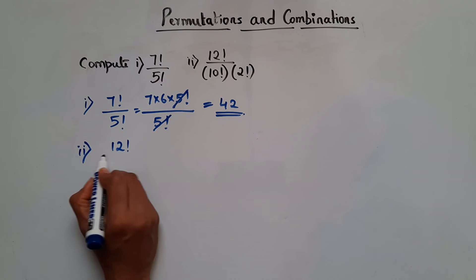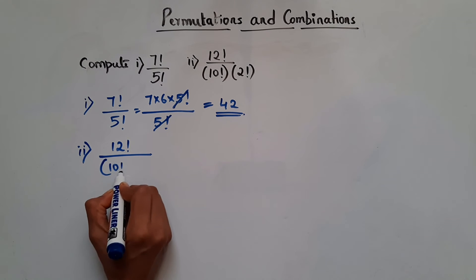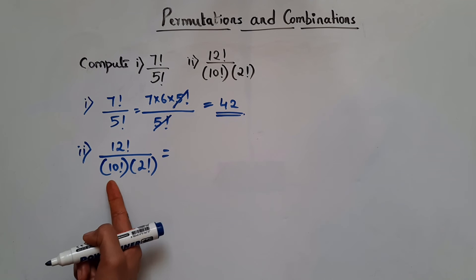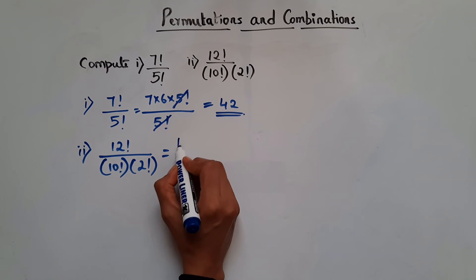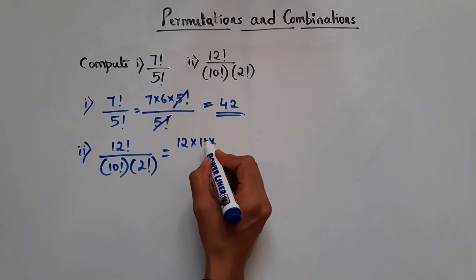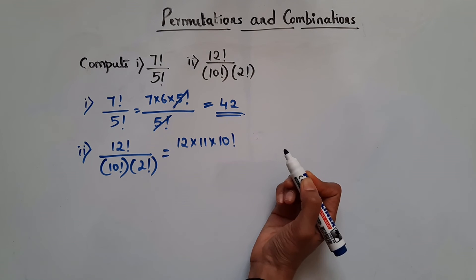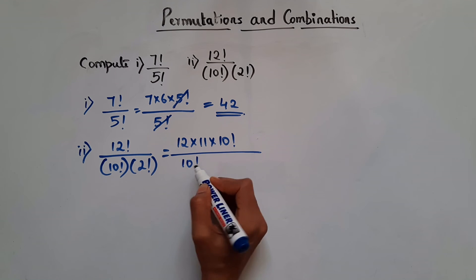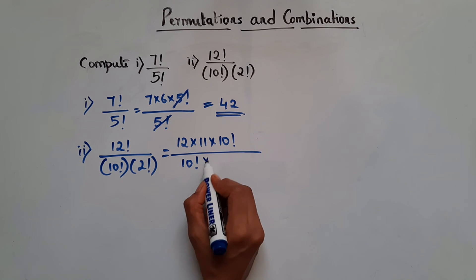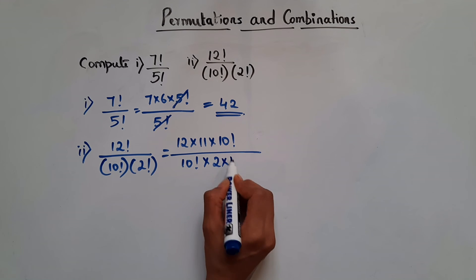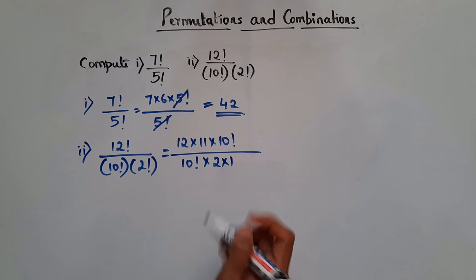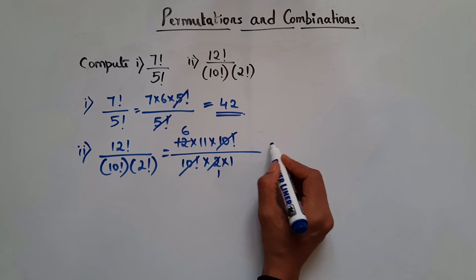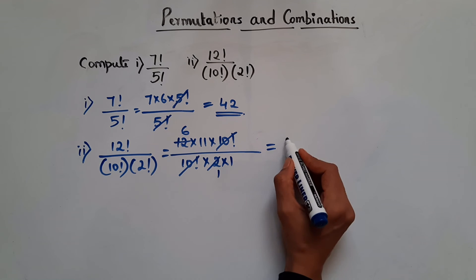Next: 12 factorial divided by (10 factorial × 2 factorial). To cancel 10 factorial, we write 12 factorial as 12 × 11 × 10 factorial. Dividing by 10 factorial cancels those terms. Then 2 factorial is 2 × 1, giving us (12 × 11) / 2 = 6 × 11 = 66.